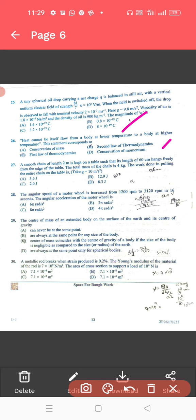For 27, the correct answer is 3.6 J. 28, the correct answer is 4 pi radians per second square. For 29, the centre of the mass. For 29, the correct answer is centre of the mass coincides. That is, C is the correct answer.